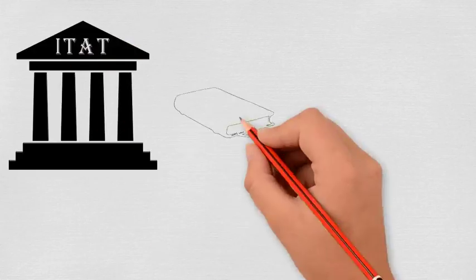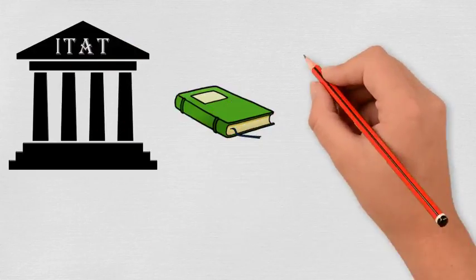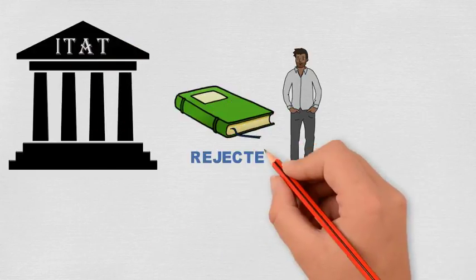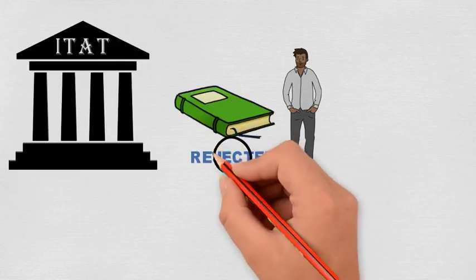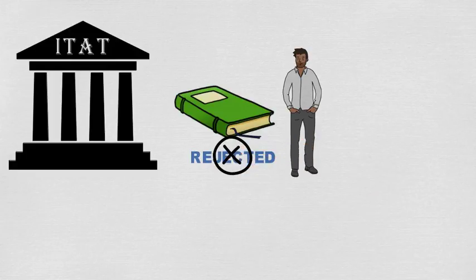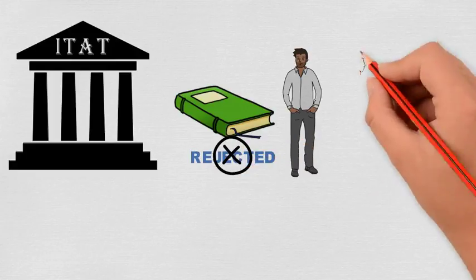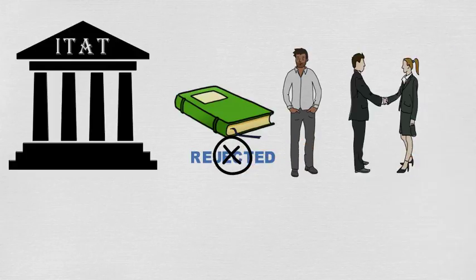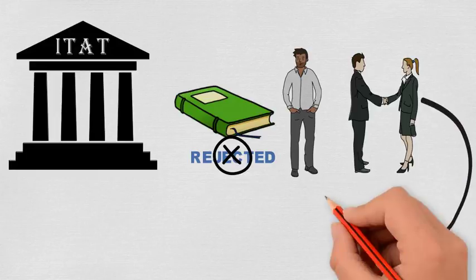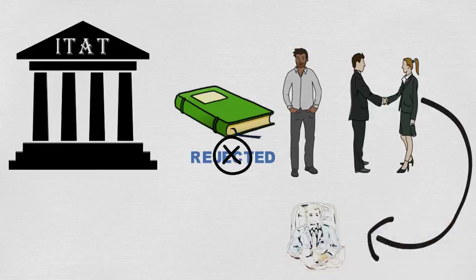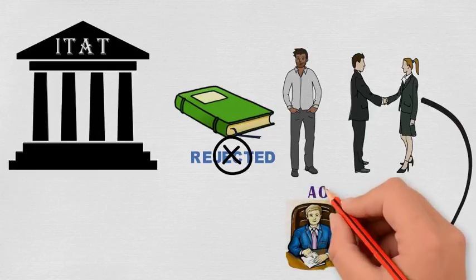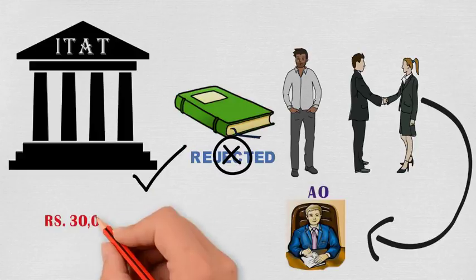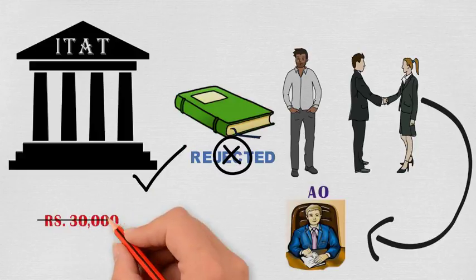ITAT held that the audited books of account of the assessee having not been rejected, the assessee's trading results for the year under consideration were deemed to have been accepted by the AO. ITAT accordingly deleted the addition.